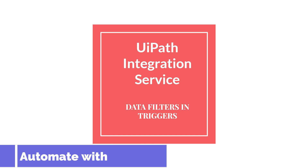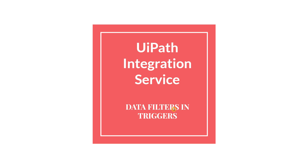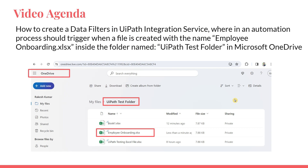Welcome back to Automate with Rakesh. In this video we are going to learn about data filters in triggers. What is a data filter in triggers will be pretty clear after you see this question: how to create a data filter in UiPath Integration Service wherein an automation process should trigger when a file is created with the name 'Employee Onboarding' inside the folder named 'UiPath Test Folder'.